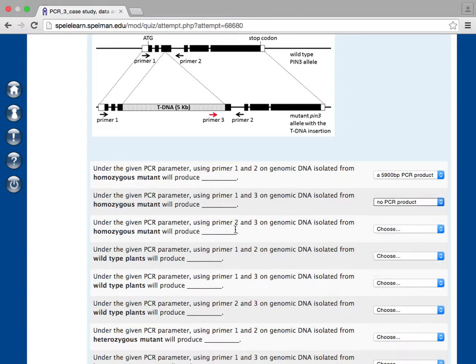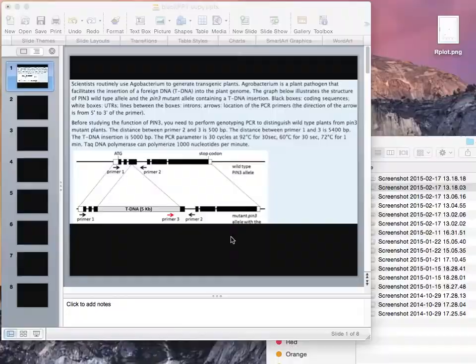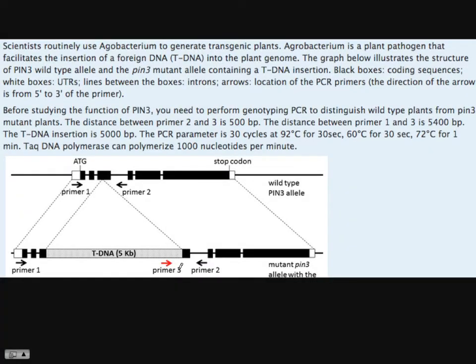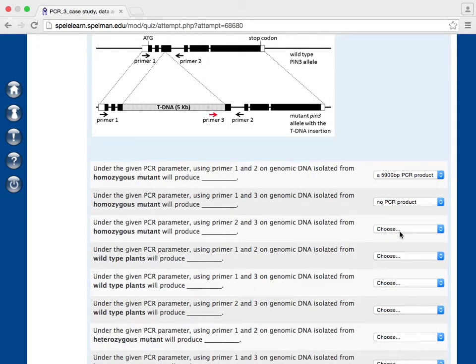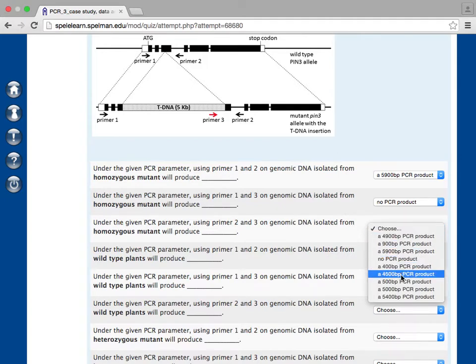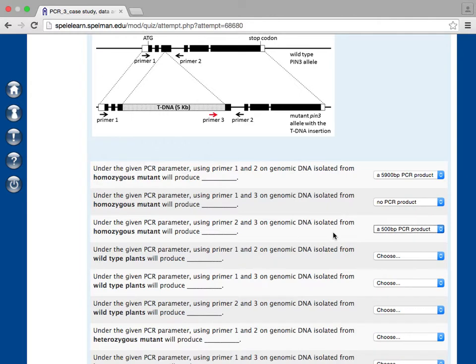Using a given PCR parameter, using primer 2 and 3 on genomic isolate homozygous mutant, how the primer 2 and 3, that would be 0.5, 500 base pairs. This is a simple one.